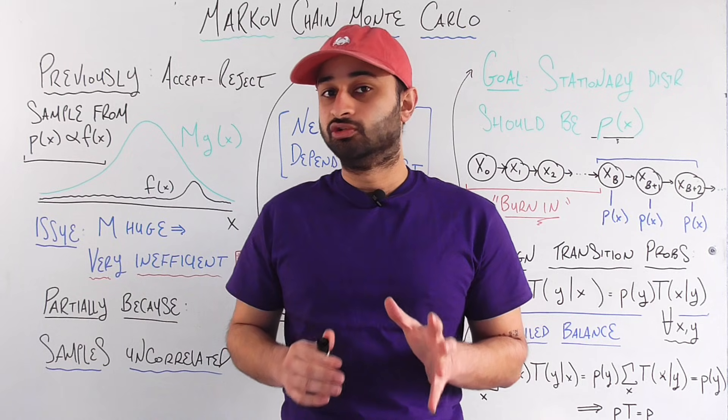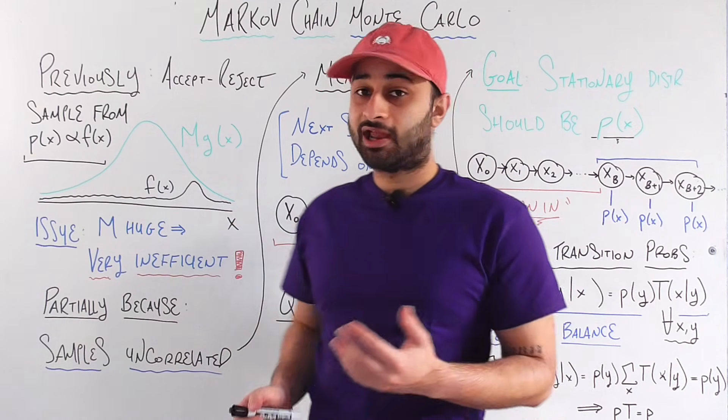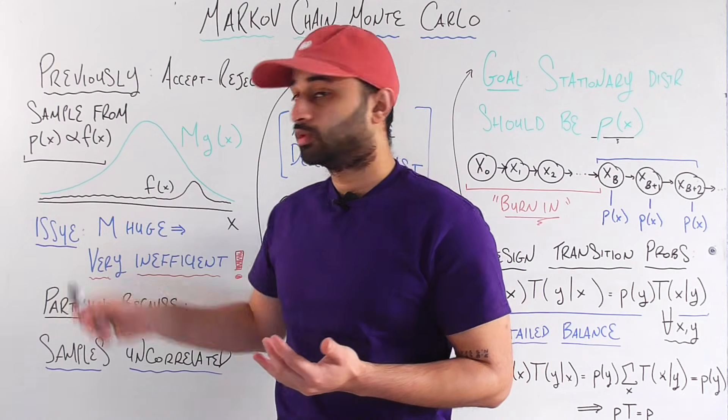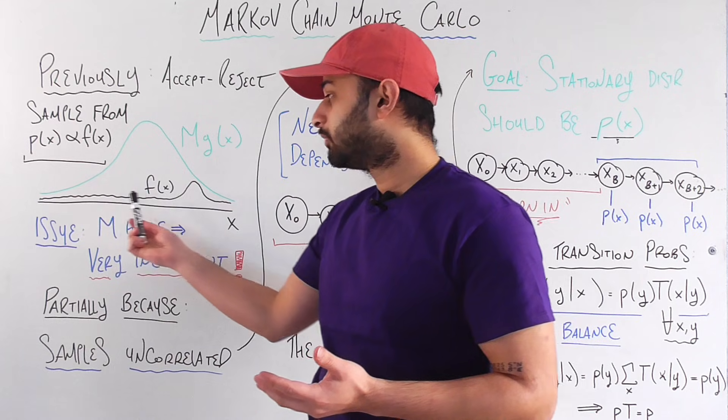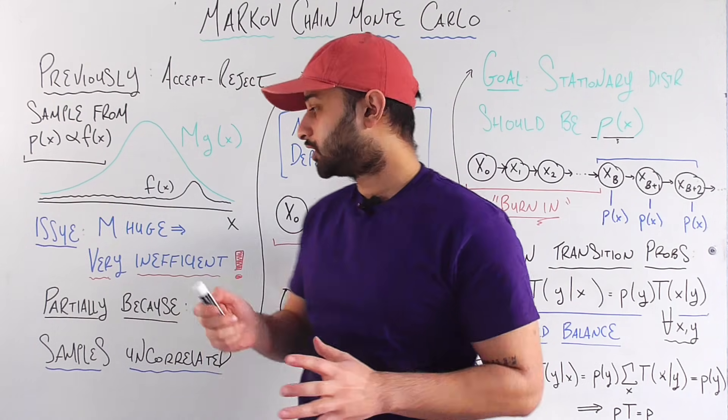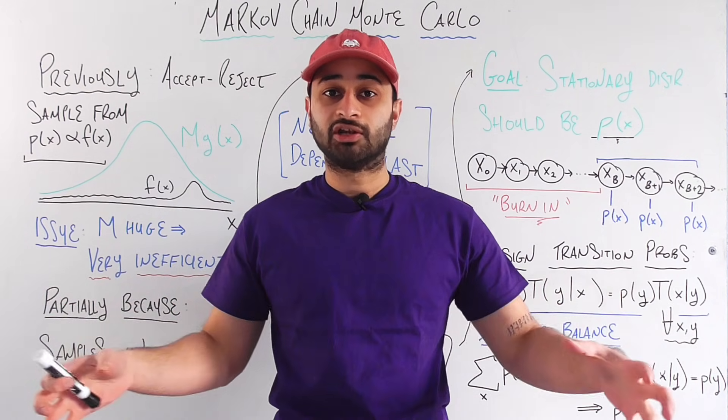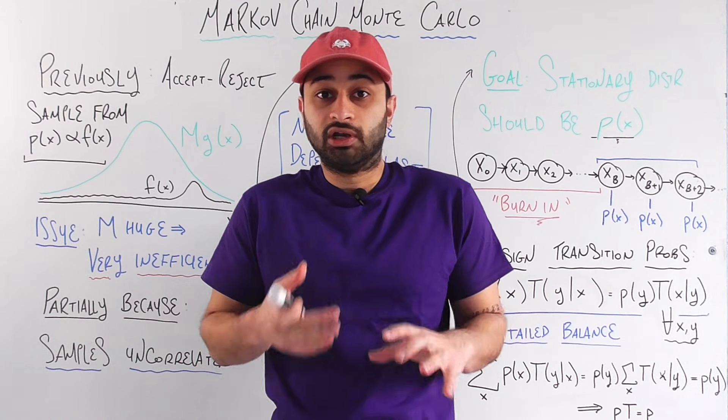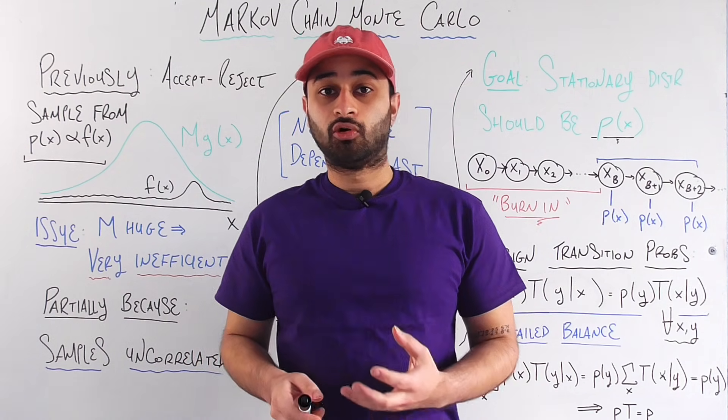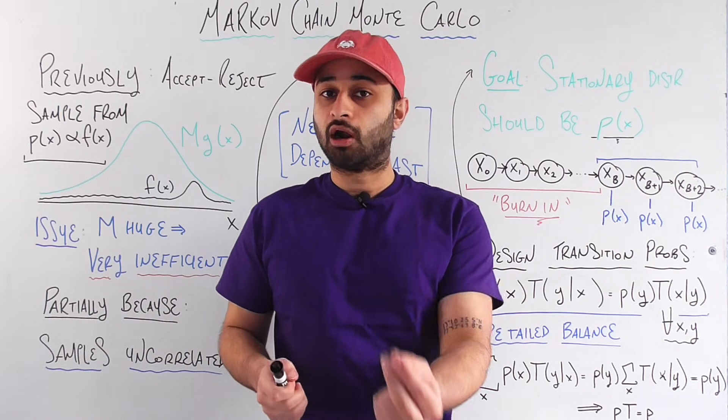For nice looking f of x usually it's not a problem, but whenever you have more real world f of x which might have peaks anywhere randomly, or you might have real world distributions p of x which are multi-dimensional, so here we've been just dealing with the one-dimensional case. But you think about a multi-dimensional distribution where there's not just a x but there's a x, y, and z and potentially many other variables, many different dimensions. You might have very weird looking distributions and so this factor m which you have to scale up your candidate distribution g of x by could potentially be very very very large.